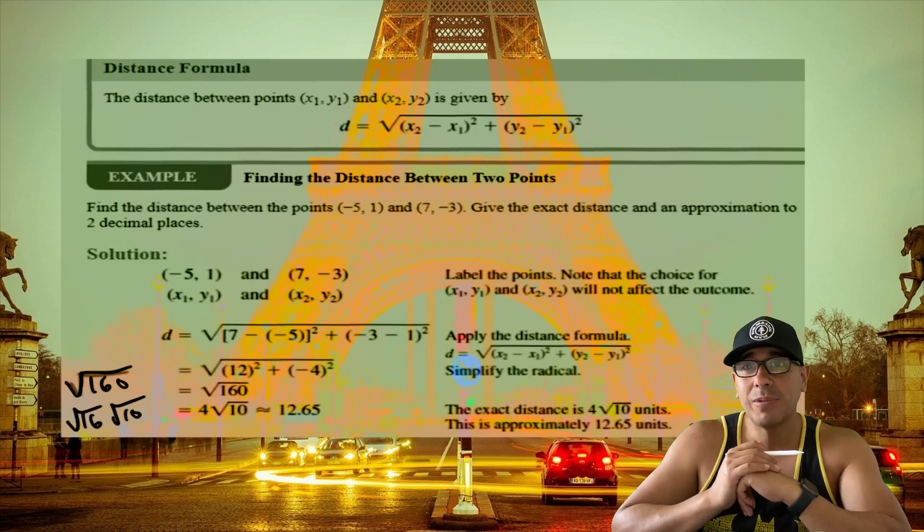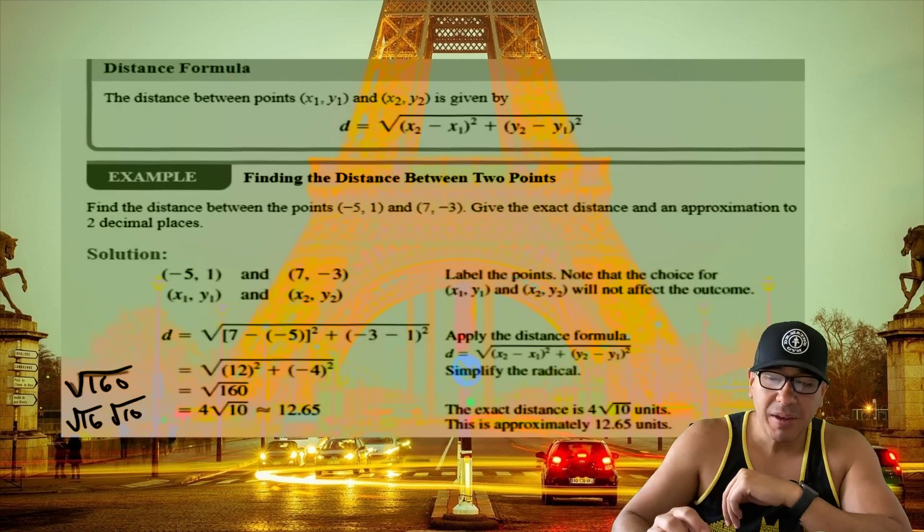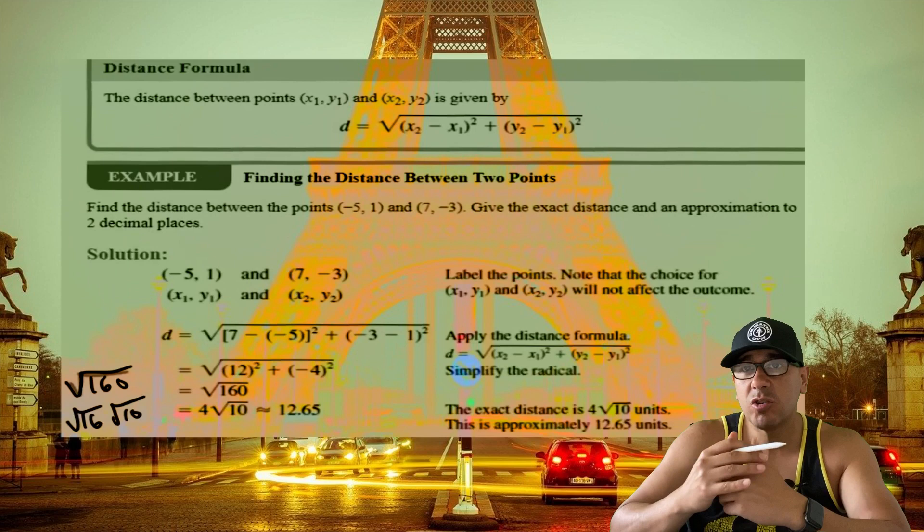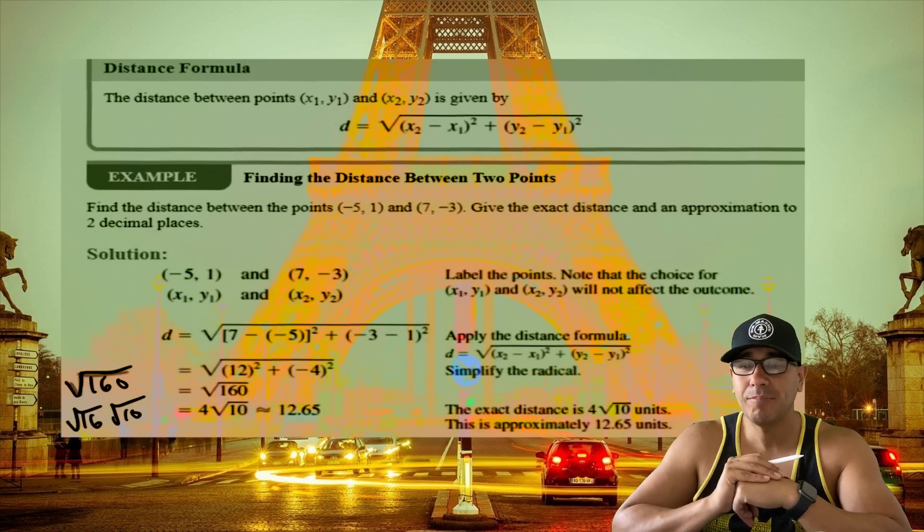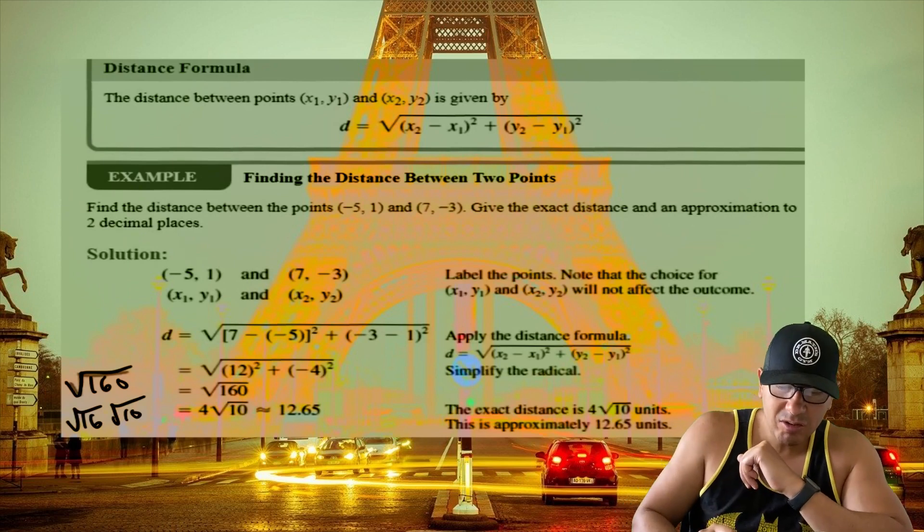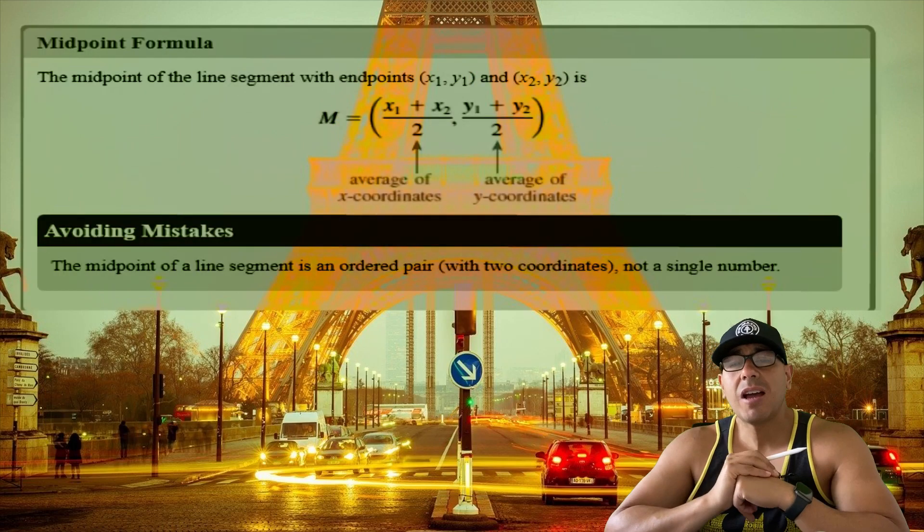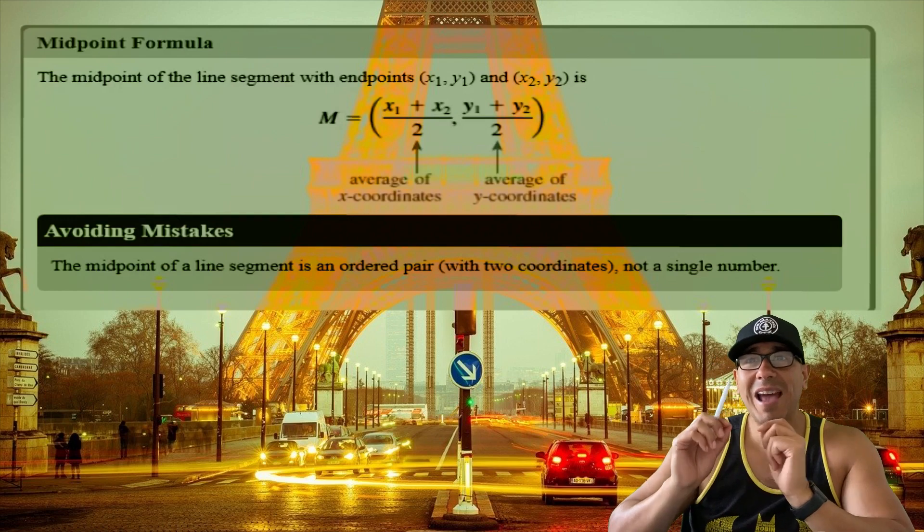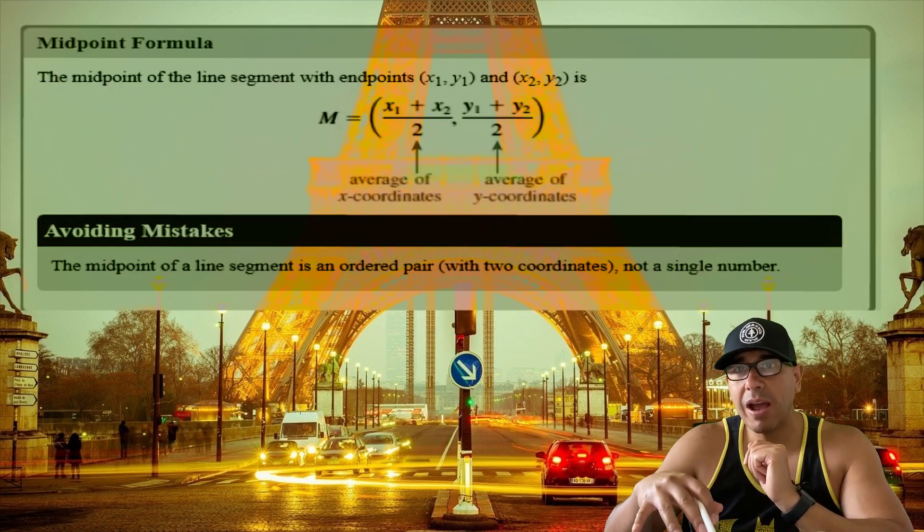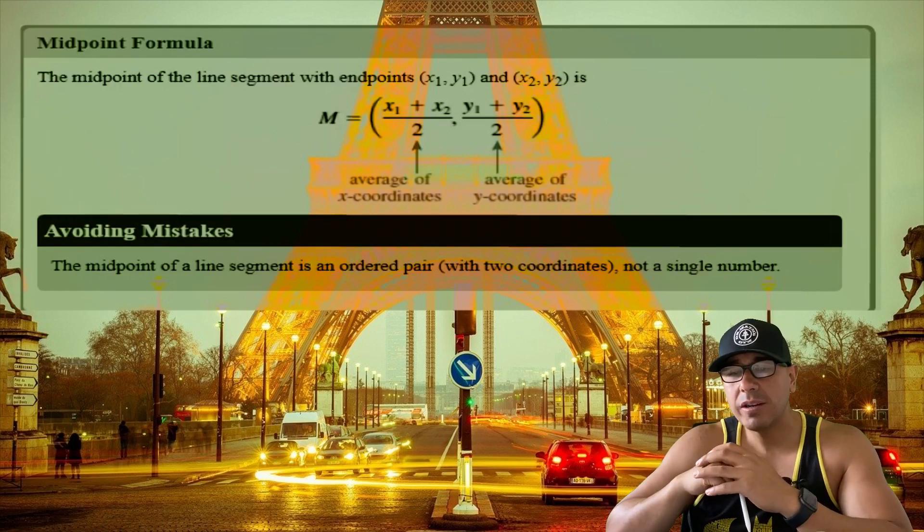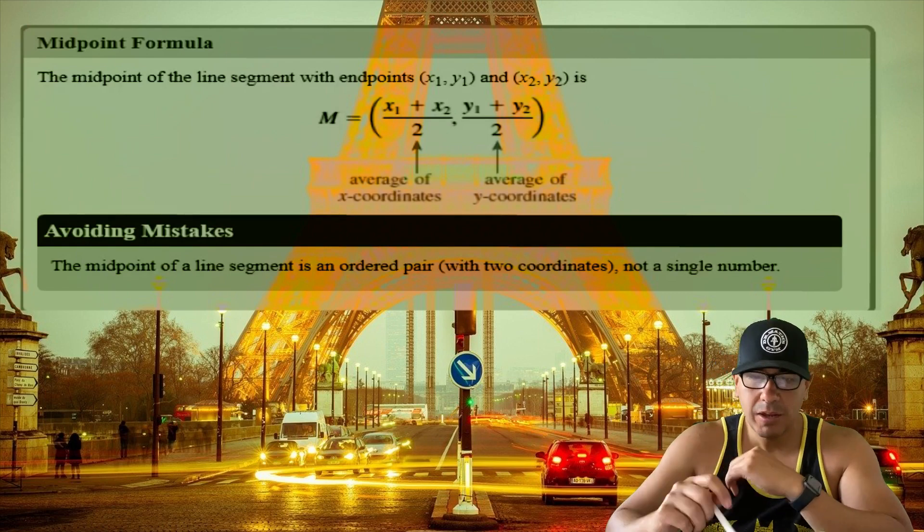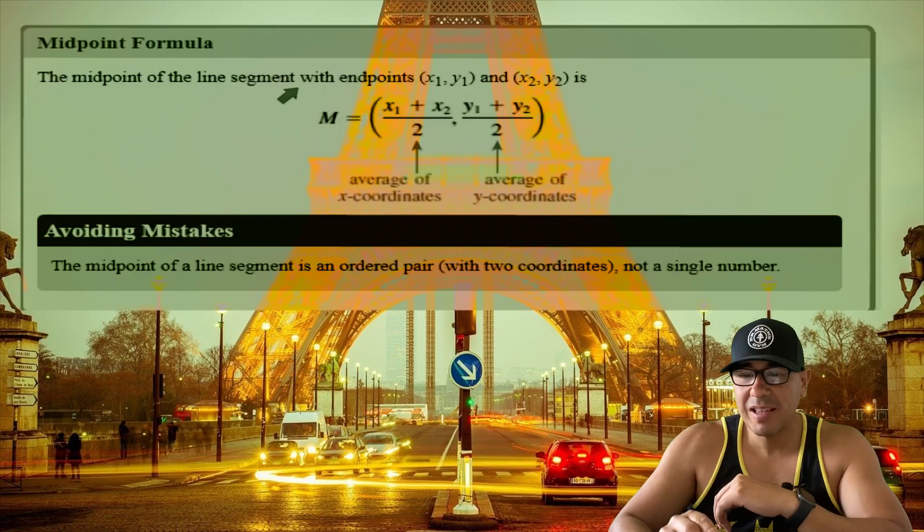This is how we're going to use the distance formula. Just to recap, be very careful with those negatives because that's where the majority of people make mistakes. Now let's go ahead and talk about our midpoint formula. When we have a line segment—and I'll show you a graph in a few minutes—we're going to look at where that point is smack in the middle. That's what we're looking for.